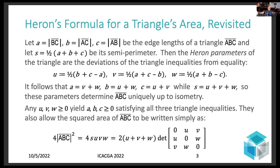So we'll let a, b, and c be the edges of a triangle ABC, and we'll let s be its semi-perimeter, that is, one half its perimeter. Then the Heron parameters, as they are known, of the triangle are the deviations of the triangle inequalities from equality. And that's shown here on this displayed equation. It follows that the distances are determined by these Heron parameters simply by summing them pairwise, which means that the Heron parameters determine the triangle up to isometry.